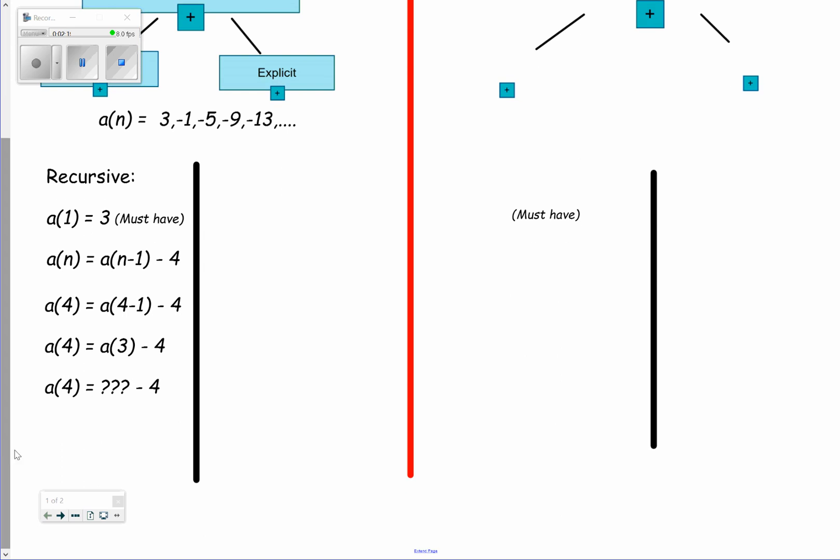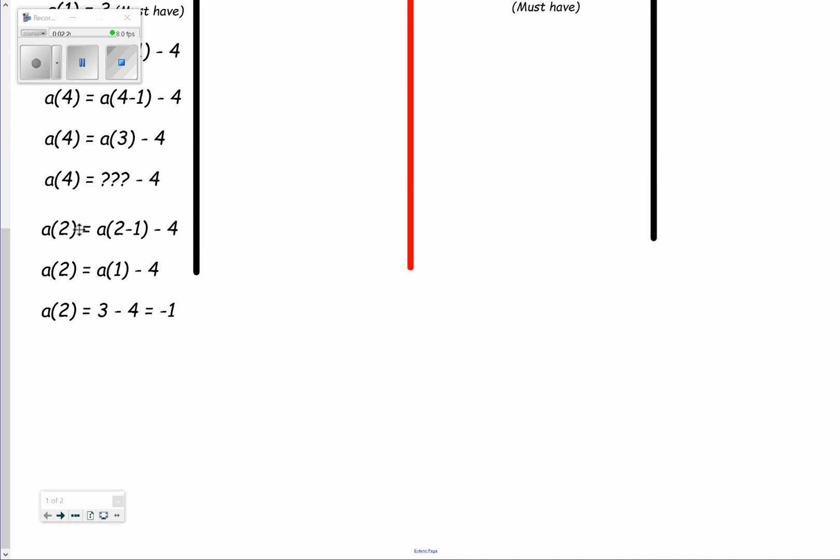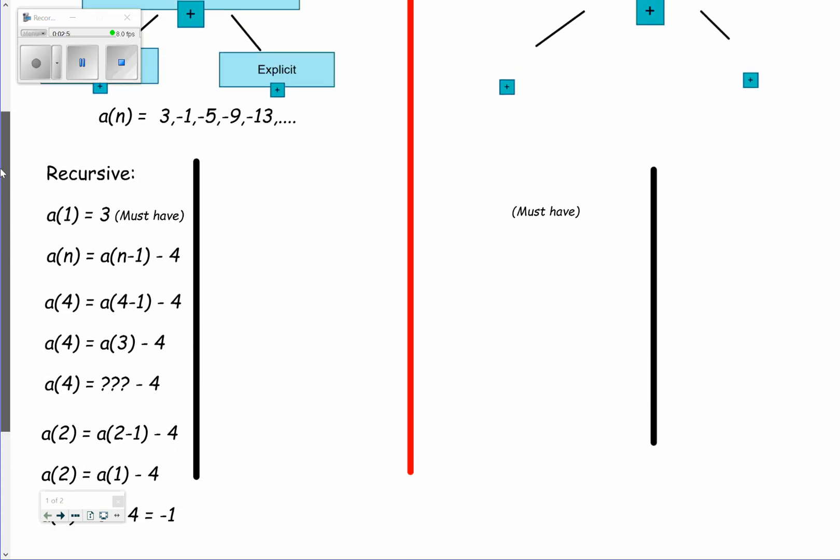That's why to properly apply a recursive sequence, it would go something like this. I want the second term. I'm going to plug a 2 in for n here, 2 in for n here. 2 minus 1 is 1. So the way I get the second term is I take the first term and subtract 4, and that's cool because I do have the first term, in this case a 3. So the second term is just the first term subtract 4, which is negative 1, and that matches the sequence.